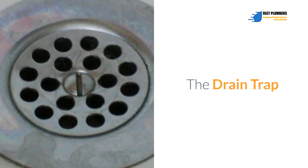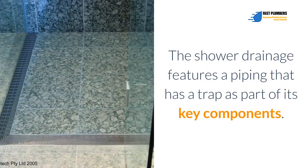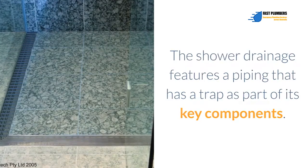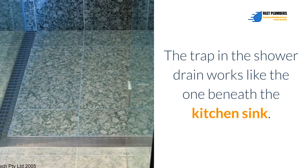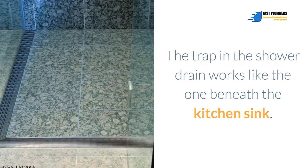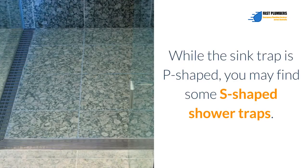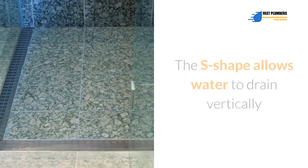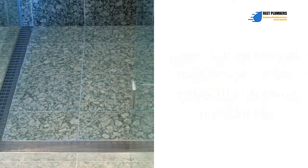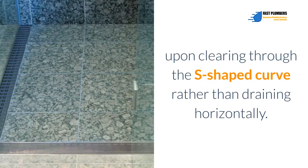The Drain Trap. The shower drainage features a piping that has a trap as part of its key components. The trap in the shower drain works like the one beneath the kitchen sink. While the sink trap is P-shaped, you may find some S-shaped shower traps. The S-shape allows water to drain vertically upon clearing through the S-shaped curve rather than draining horizontally.